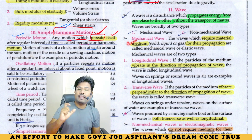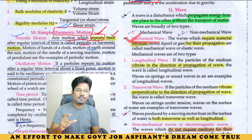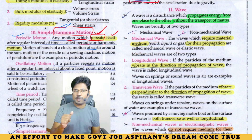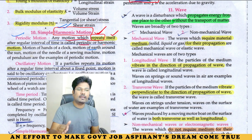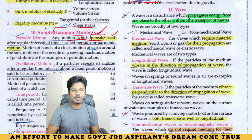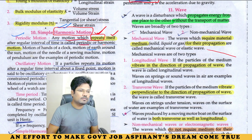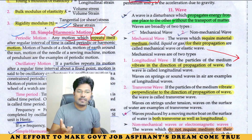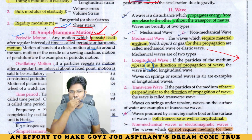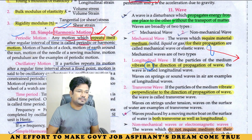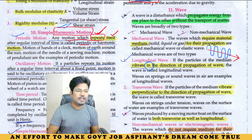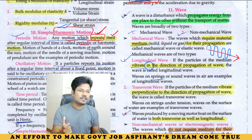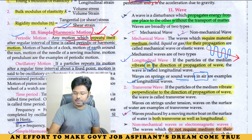Mechanical waves, also called elastic waves, require a material medium for their propagation — such as solid, liquid, or gas. In longitudinal waves, the particles of the medium vibrate in the direction of propagation of the wave. Examples of longitudinal waves include waves on springs and sound waves in air.